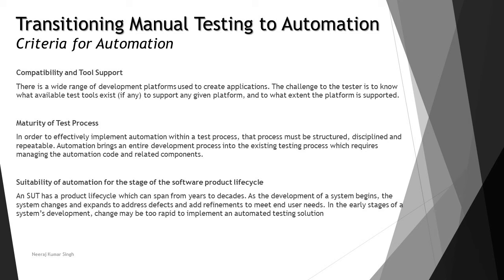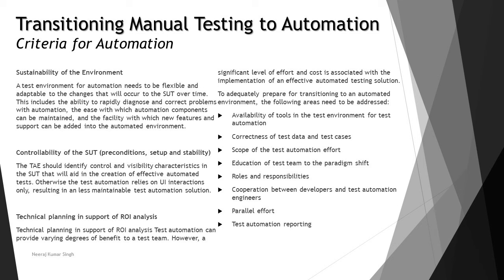Sustainability of the automation environment is also important. The test environment for automation needs to be flexible and adaptable to changes in the SUT over time. Tests prepared for one release could be no longer useful in a new environment. This includes the ability to rapidly diagnose and correct problems with automation, the ease with which automation components can be maintained, and the facility with which new features and support can be added.